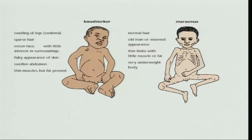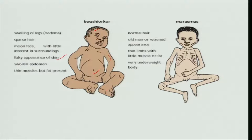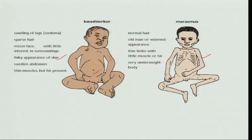Comparing kwashiorkor and marasmus: the kwashiorkor child has swelling of the legs, sparse hair, moon face with little interest in surroundings, flaky dry skin, swollen abdomen, and thin muscles but fat is present. In the marasmic child, the hair is normal, but the child looks like a pocket-sized old man. The limbs are very thin without any muscle or fat, and body weight is less than 60 percent of the standard weight.